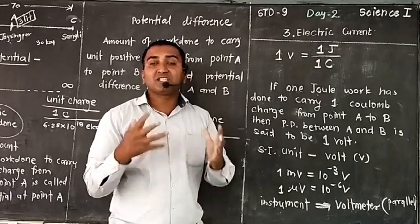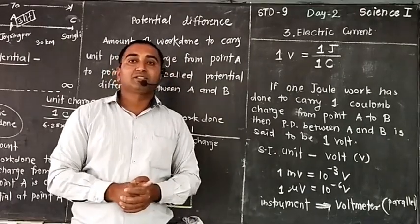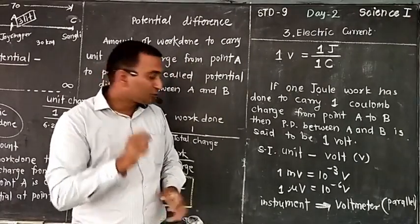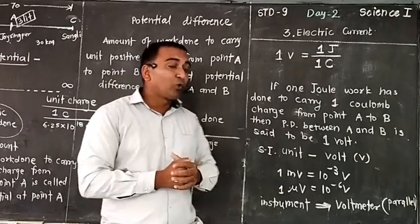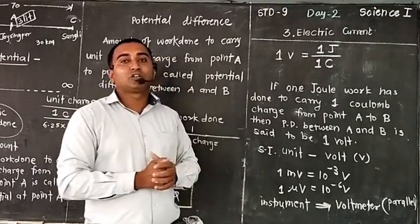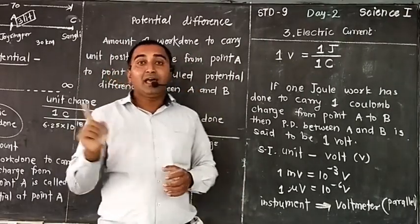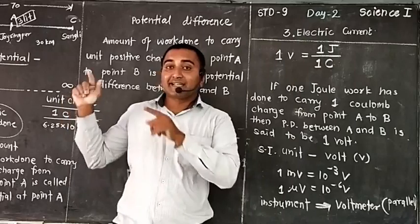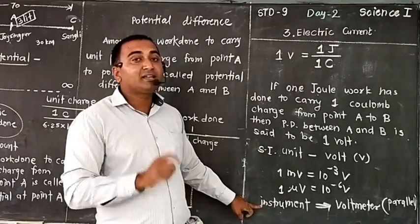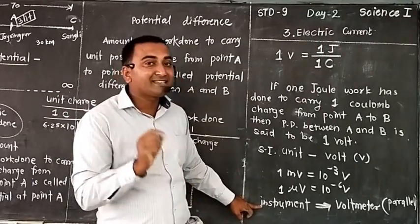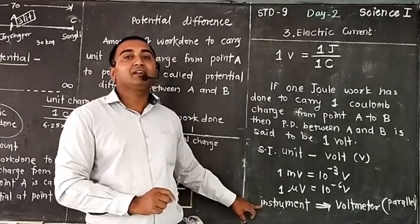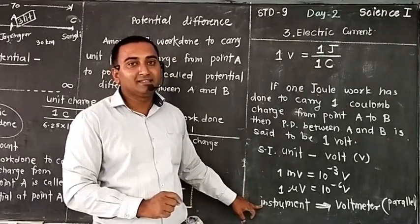Which instrument can we use to measure this potential difference? The instrument is a voltmeter. An ammeter is connected in series, but a voltmeter is always connected in parallel while connecting it in the circuit.